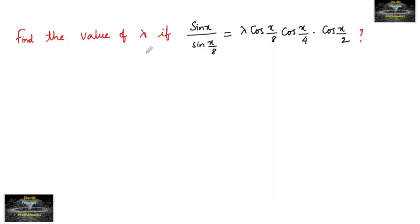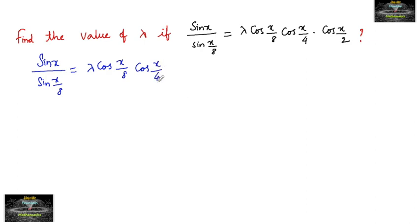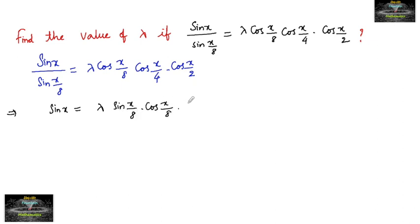Find the value of lambda if sin(x) / sin(x/8) = λ · cos(x/8) · cos(x/4) · cos(x/2). Given this equation, we can rearrange to get: sin(x) = λ · sin(x/8) · cos(x/8) · cos(x/4) · cos(x/2).